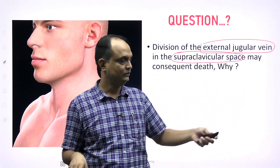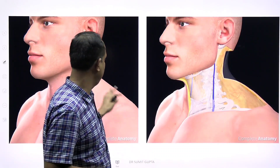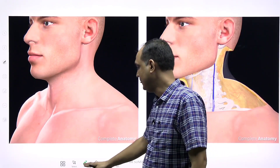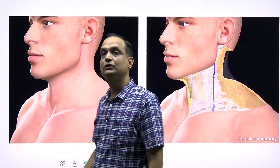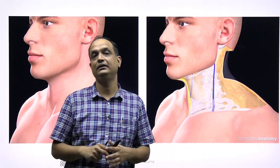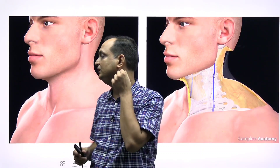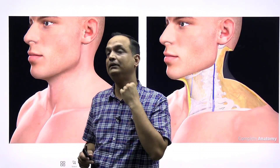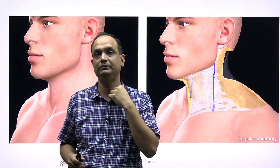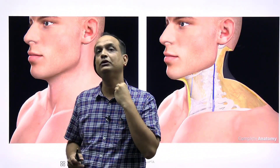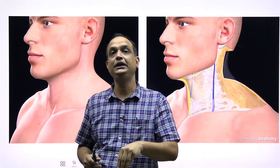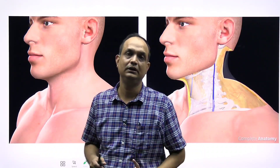Let's see the detailed anatomy. When you remove the skin and perform the dissection, you first identify the course of the external jugular vein. The external jugular vein is very prominent in muscular people, and it crosses the sternocleidomastoid muscle. After crossing the sternocleidomastoid, since it is a superficial subcutaneous vein, it must become deep to drain into the deep veins.